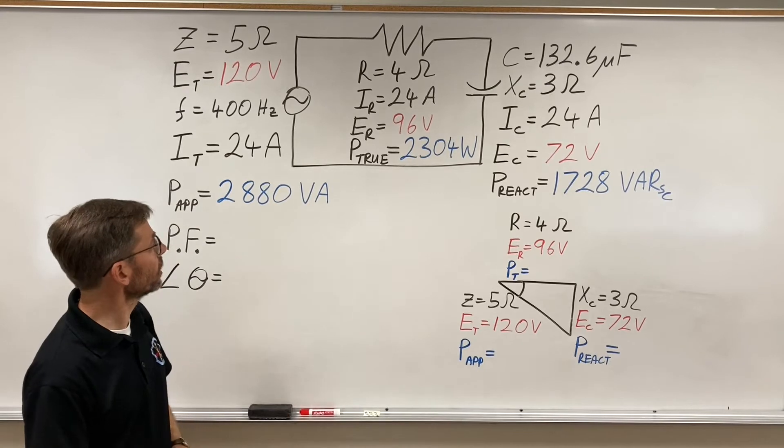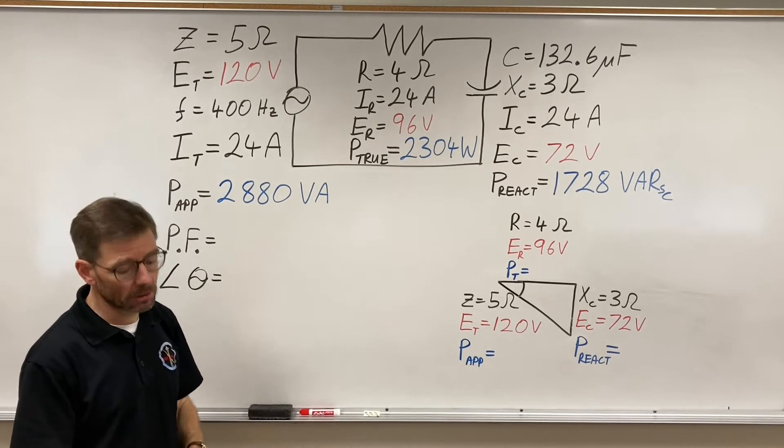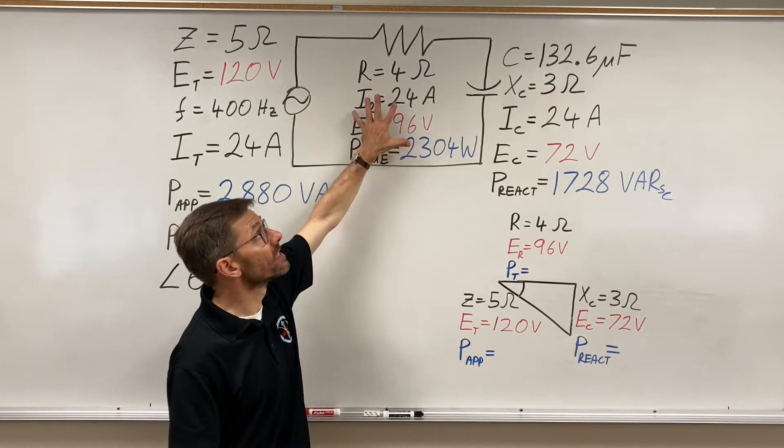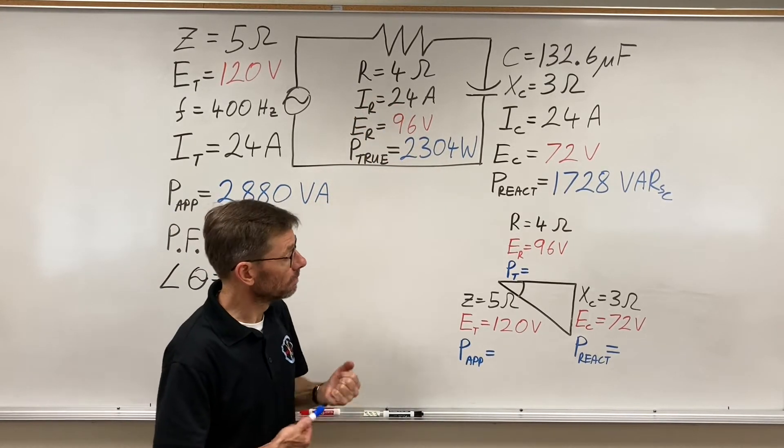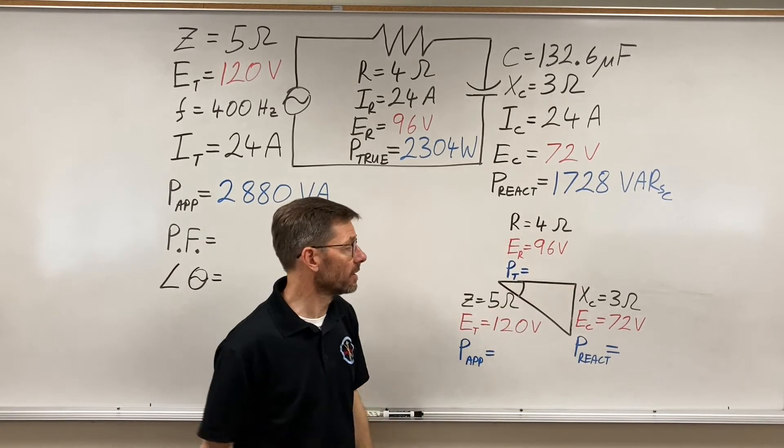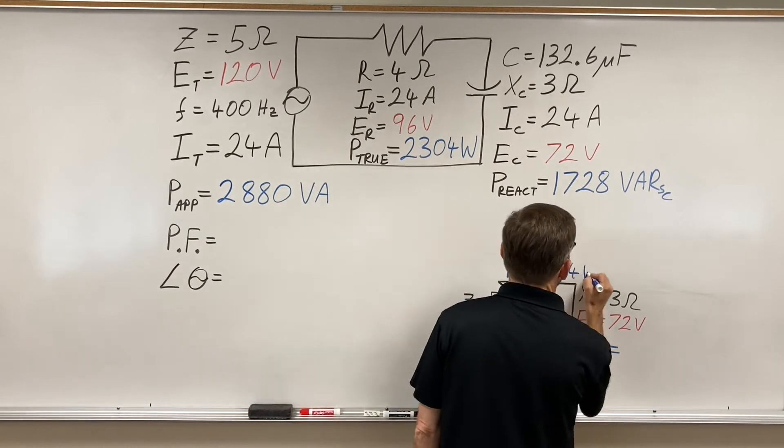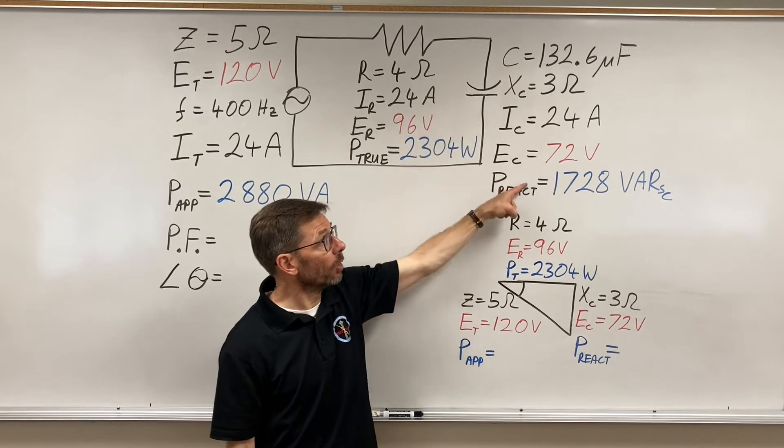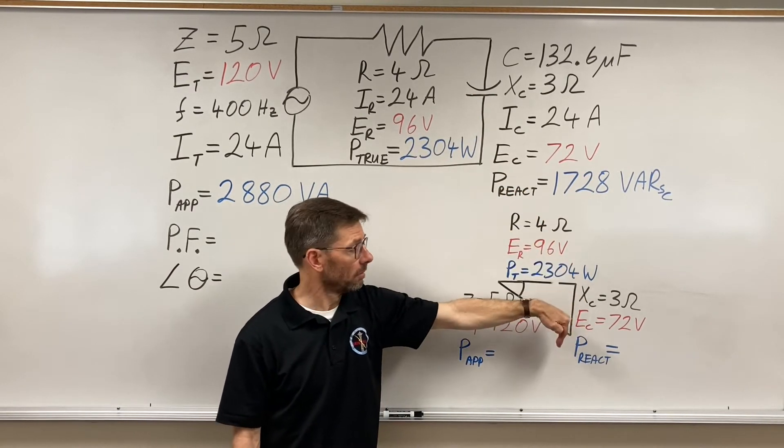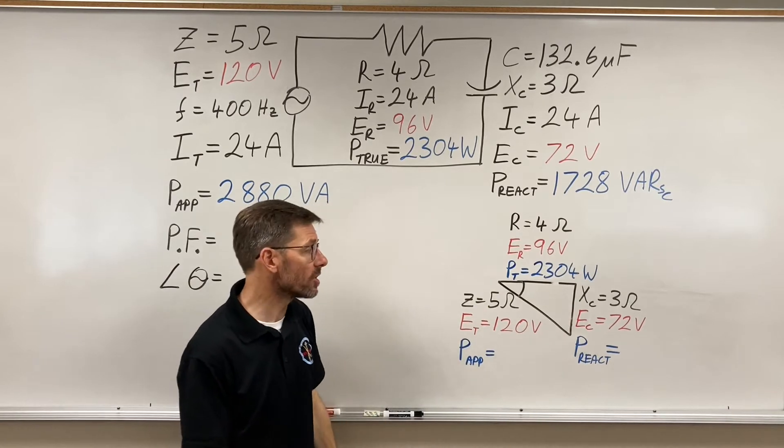Let's put them in their places where they go on the power triangle. True power, because it's a resistive value, goes on the horizontal line. The reactive component will go on the vertical, reactive components always on the vertical.